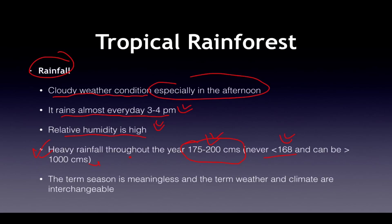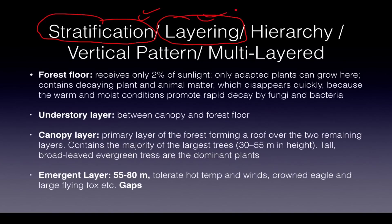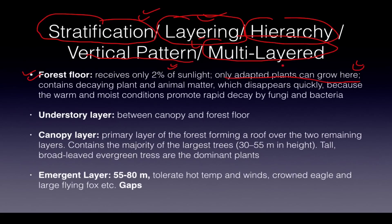Cherrapunji and Mawsynram in Meghalaya have very high rainfall. The term 'season' is absolutely meaningless here because there is no cold or hot season — the terms weather and climate are used interchangeably. There is a concept called stratification — also called layering, hierarchy, vertical patterns, or multi-layering. In a tropical rainforest, the forest floor receives only 2% of sunlight. Only specially adapted plants can grow here, and decaying matter disappears quickly due to warm and moist conditions.